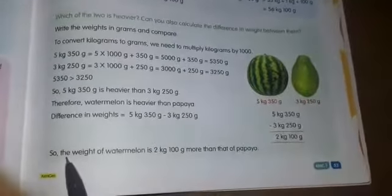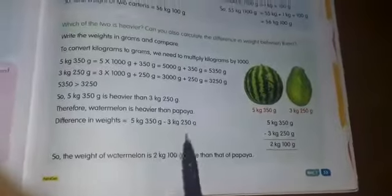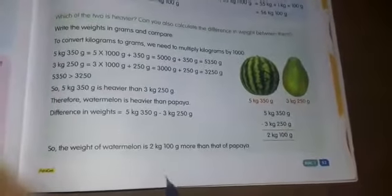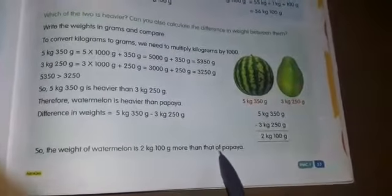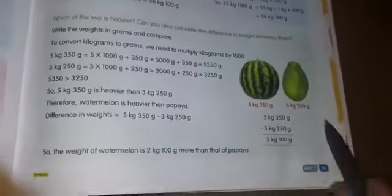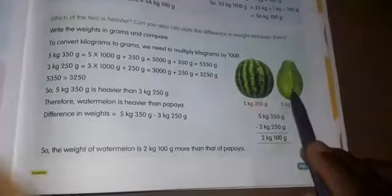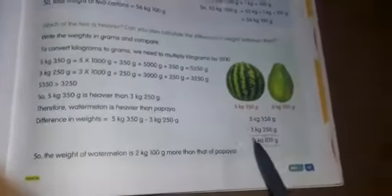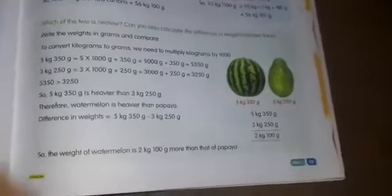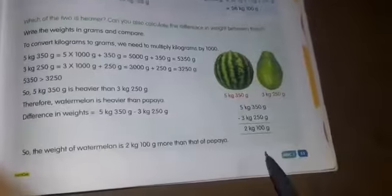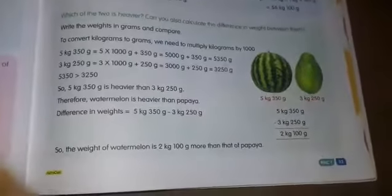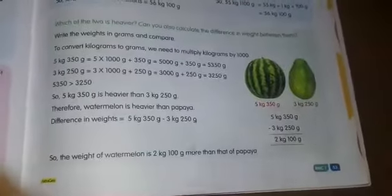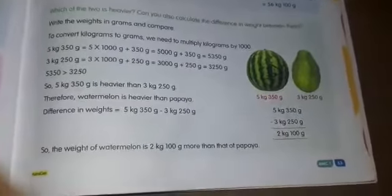The difference in weight between the two fruits is 2 kilograms 100 grams. The watermelon is heavier, and the weight of the watermelon is 2 kilograms 100 grams more than the papaya.